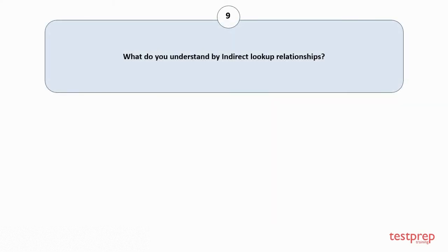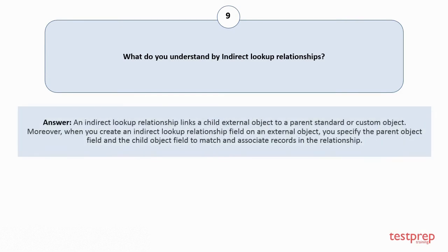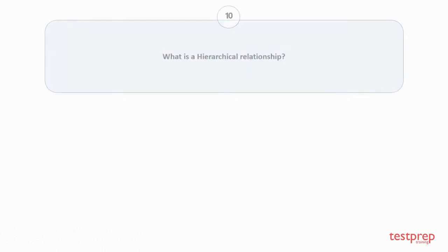Question number nine: What do you understand by indirect lookup relationships? An indirect lookup relationship links a child external object to a parent standard or custom object. Moreover, when you create an indirect lookup relationship field on an external object, you specify the parent object field and the child object field to match and associate records in the relationship chain.